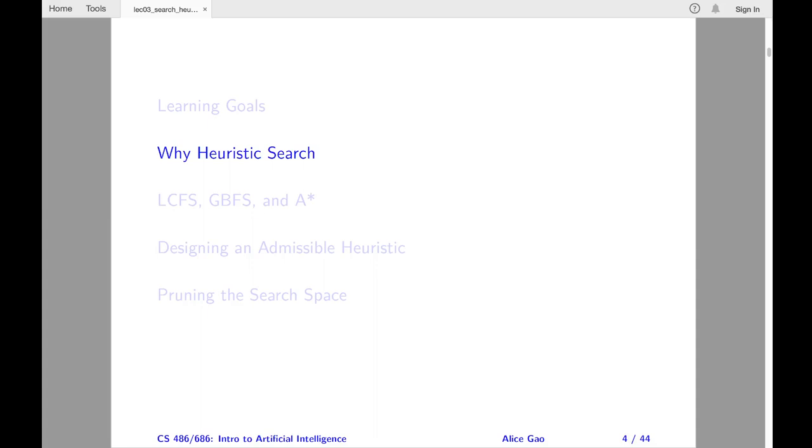That's everything on the motivation for using heuristic search algorithms. Let me summarize. After watching this video, you should be able to explain the advantage of using a heuristic search algorithm versus using an uninformed search algorithm, and give an example to illustrate this advantage.